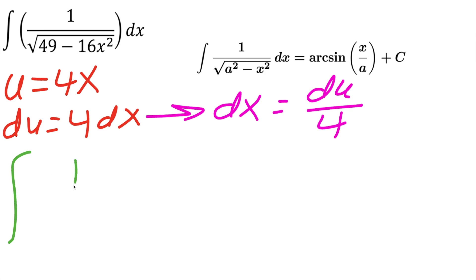So we're going to have 1 divided by the square root. So here it says 49, but we want a squared. Now 7 squared is equal to 49, so now it's similar, minus, so it says x squared. We said that u is equal to 4x, and if you were to square this, you get 16x squared. So we have minus u squared. And instead of dx, we can replace it with du divided by 4.